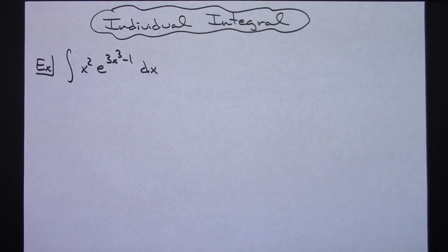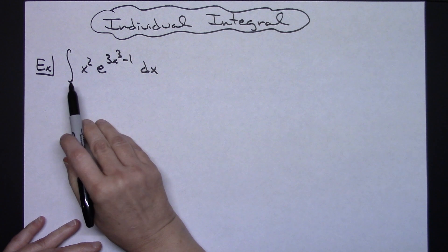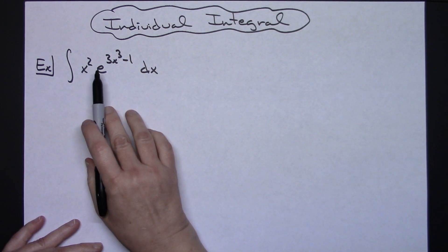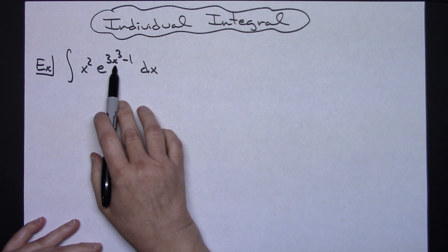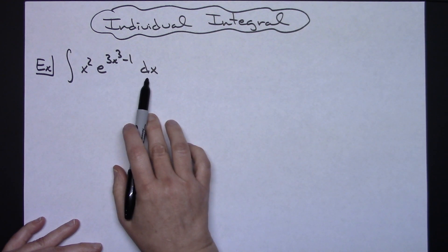In this video I'm going to be working out an individual integral. We're going to take a look at the integral of x squared e raised to the 3x to the third minus 1 dx.